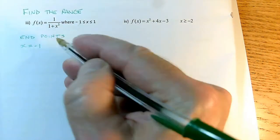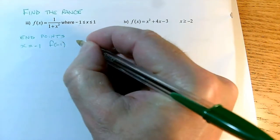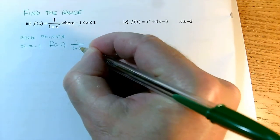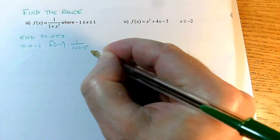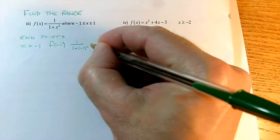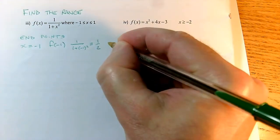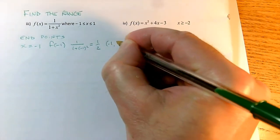I shove that into f of x, so I need to do f of minus 1, and I get 1 over 1 plus minus 1 squared. Minus 1 when you square it is plus 1, so this is 1 over 2. So I've got an endpoint of minus 1, a half.